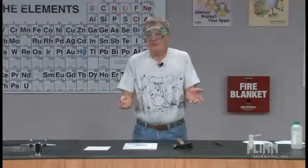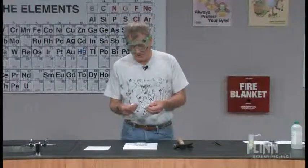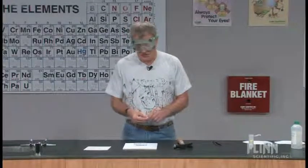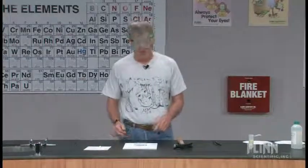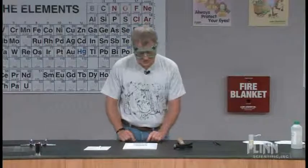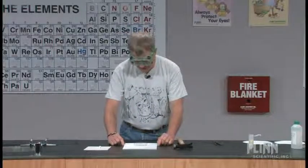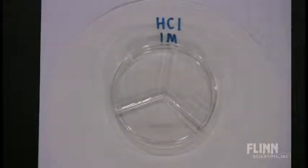Chalk, of course, is calcium carbonate, primarily with a little bit of binder in it. To show surface area, I'm going to demonstrate the reaction of calcium carbonate — chalk — with hydrochloric acid. In this Petri dish, in two of the wells, there's some hydrochloric acid, roughly one molar concentration.